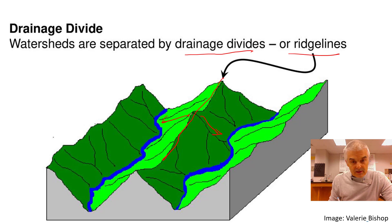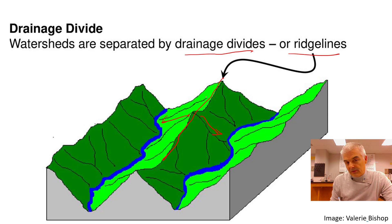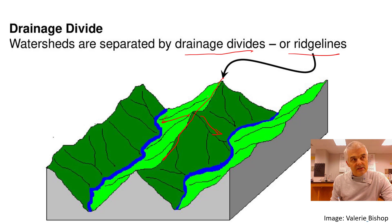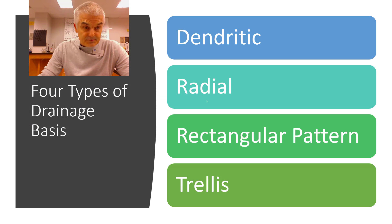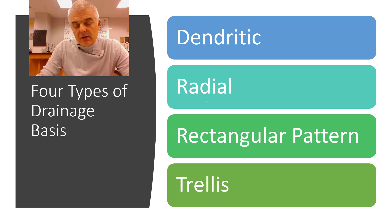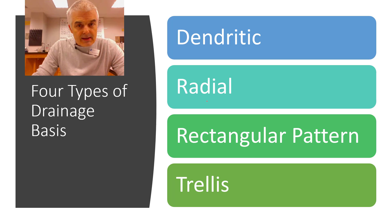Now a divide can be small, like just between two ridge lines, but there are also things like continental divides, where if a drop of water falls on one side — say through Colorado and New Mexico in the United States — one side goes to the Mississippi River and ultimately to the Atlantic Ocean, and the other drop would go to the Pacific Ocean. There are four types of drainage patterns: dendritic, radial, rectangular, and trellis. You should jot those down, and let's take a quick snapshot of each.